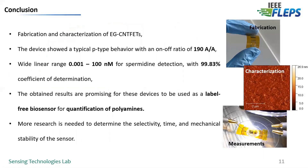From this work, we can conclude that we have fabricated and characterized electrolyte-gated carbon nanotube field-effect transistors. The device showed p-type behavior with an on-off ratio of 190. Our biosensor was able to detect spermidine in the range of 0.01 to 100 nanomolar. The results obtained are promising for these devices to be used as a label-free biosensor for detection of spermidine and other toxicants as well. However, more research is needed to determine the stability, response time, selectivity, and mechanical stability of the sensor.